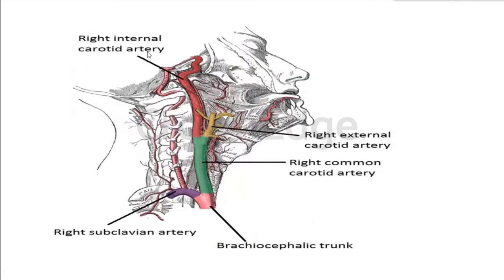Let's see the diagram where you can see the brachiocephalic trunk, the subclavian artery, and the right common carotid artery, which gives the internal carotid and the external carotid artery branch at the level of C4 vertebra. You can also see a small bulge, known as the carotid sinus. There is also a bulge at the entrance to the peripheral part of the internal carotid. At the C4 level you can feel the pulse from the common carotid artery, and if you press a little harder, you may feel the blood gushing through the internal carotid at this level.